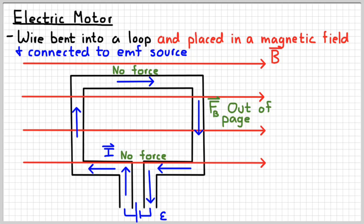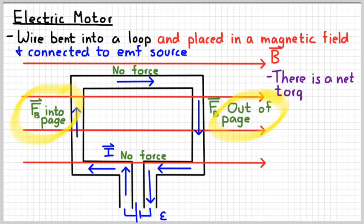On the bottom, there's no force, because again they're parallel to each other. And then if you do your right hand rule on the left side, you would get a magnetic force going into the page. And so the net effect, you have one side being pulled out of the page, the other side being pulled into the page. The net effect is you're going to have a torque on the loop, and it's going to start to rotate.